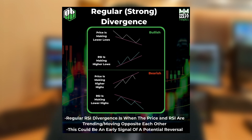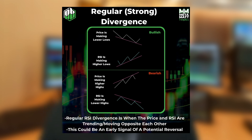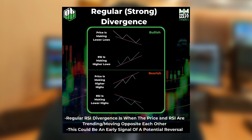A regular or strong bullish divergence is when the price is making lower lows and the RSI is making higher lows. A regular or strong bearish divergence is when the price is making higher highs and the RSI is making lower highs. The divergence between the RSI and the price shows us that the current trend could be losing strength and a reversal might occur.